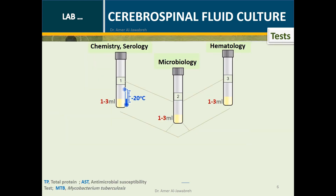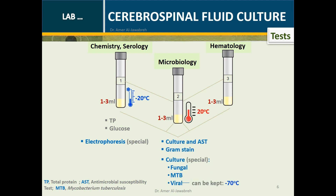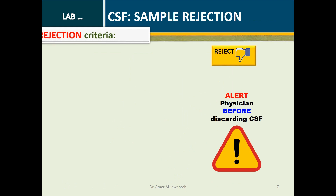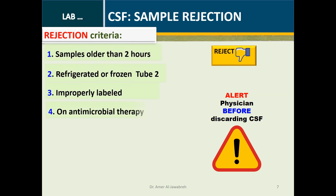CSF Tests: Tube 1 is used for measuring total protein and glucose, and sometimes electrophoresis. Tube 2 is preserved at 20°C for culture, gram stain, and sometimes special cultures for fungal, MTB, and viral agents. Tube 3 is preserved at 4°C for cell count and cytology. CSF samples can be rejected in certain circumstances; however, always alert the physician before discarding.